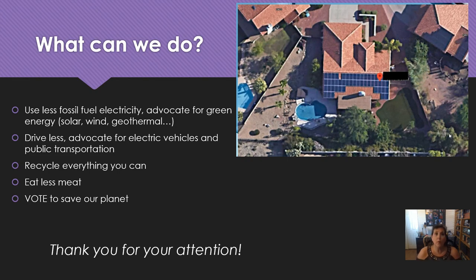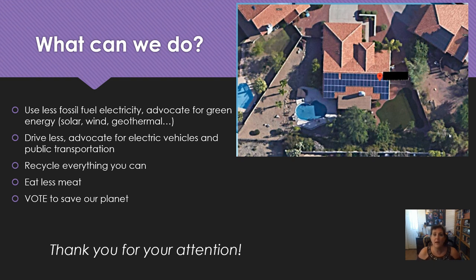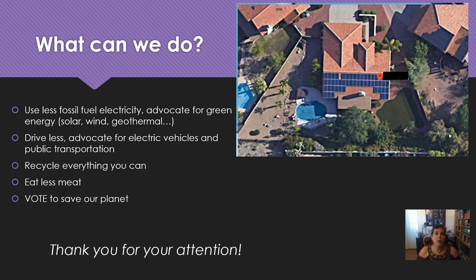So what can you do? We need to reduce our carbon emissions — CO2. So we need to use less fossil fuel electricity, meaning we should advocate for green energy like solar, wind, and geothermal. We can also reduce using gasoline-powered cars — drive less, advocate for electric cars and public transportation. Recycle everything you can. Eating less meat is a great idea — try meatless Mondays or more. And vote for politicians that support green energies, recycling, and saving our planet.